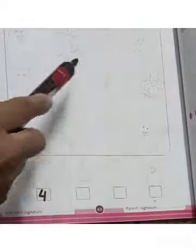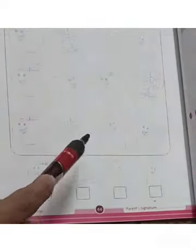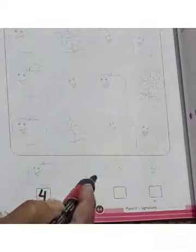Now we will count how many flowers are in this worksheet. Let's count: 1, 2, 3. So we will write number 3 in this box.